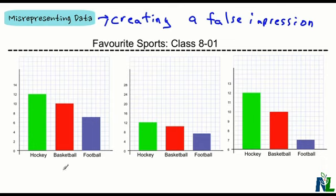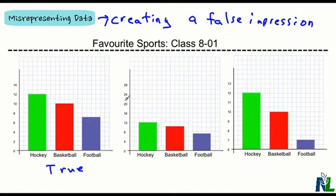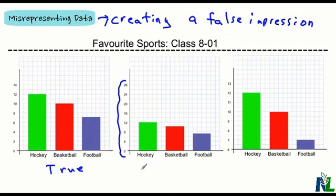Over here, this was like a poll of people's favorite sports, and they were given a choice of three sports. This graph here is kind of the true representation of it. Now somebody wanted to show that there wasn't a big difference between them, so what they did is exaggerate the scale — instead of going up by ones or twos, they skipped by more and labeled every four. What that does is make the difference between the bars seem less great, giving you the idea that there's not much of a difference or preference.